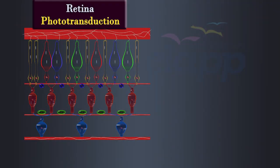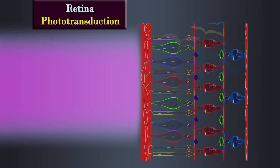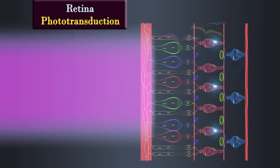There are two types of photoreceptor cells in the retina called rod cells and cone cells. Rod cells are responsible for vision in dim light and perception of black and white. Cone cells are responsible for color vision and detailed visual acuity.